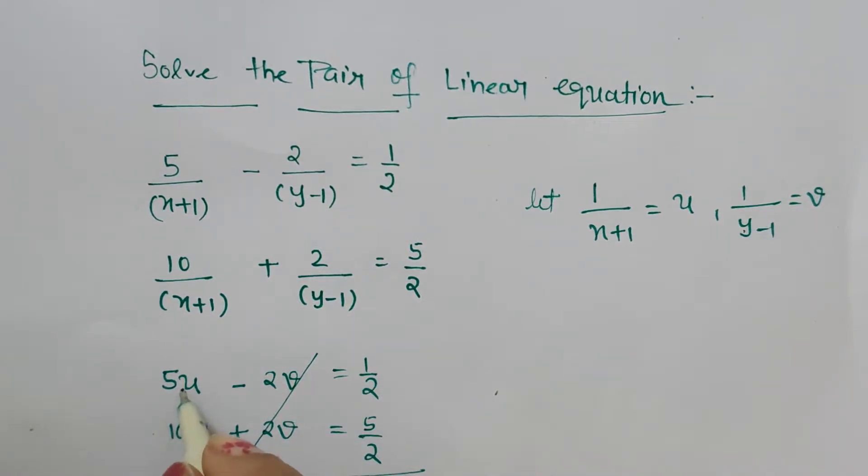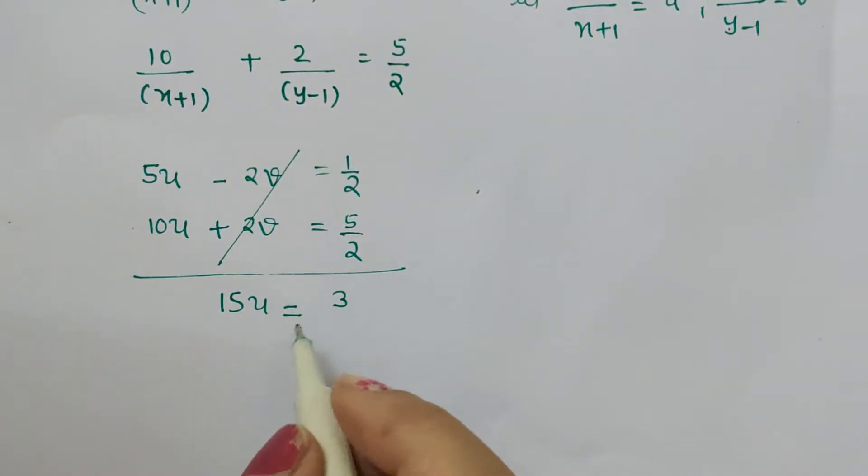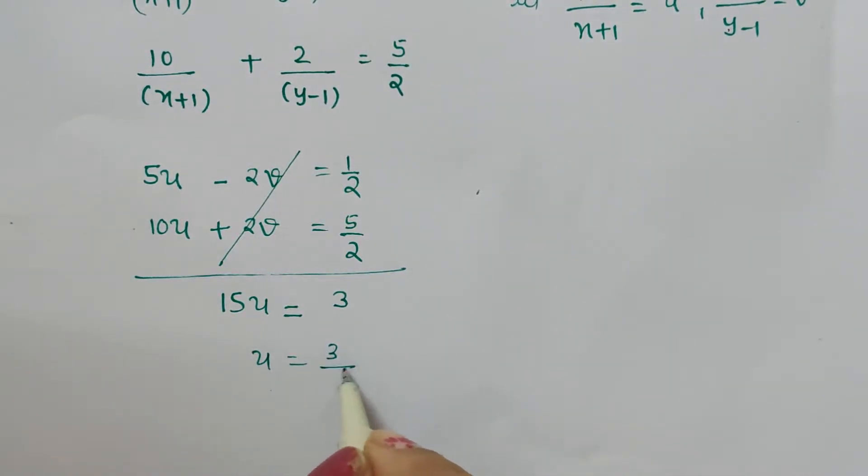Now by using the elimination method, this gets cancelled. By adding both equations, we get 15u equals—by adding these two, the denominators are the same so the numerators get added—6/2, which is 3. So u is 3/15, which gives 1/5.